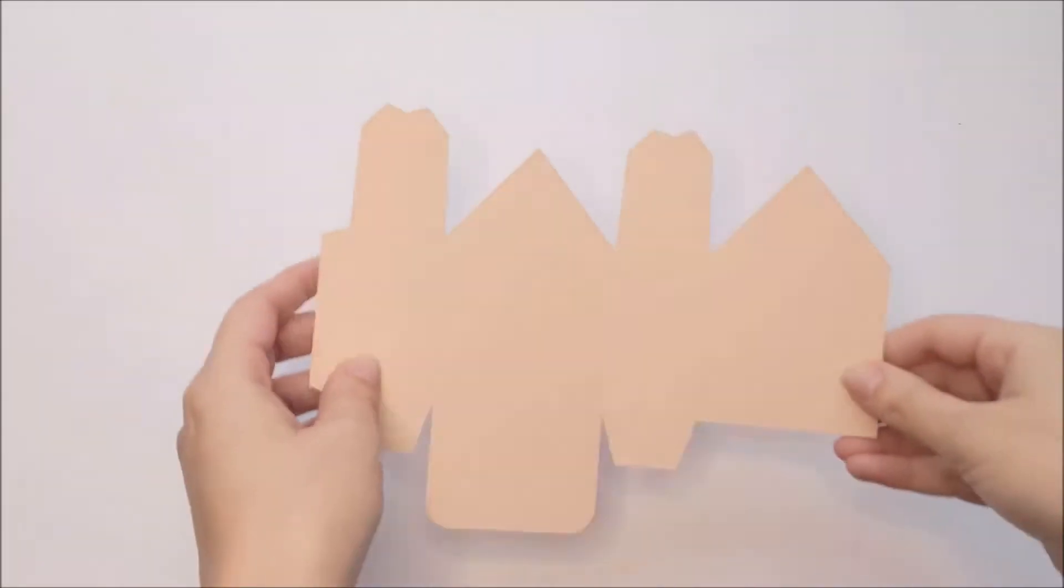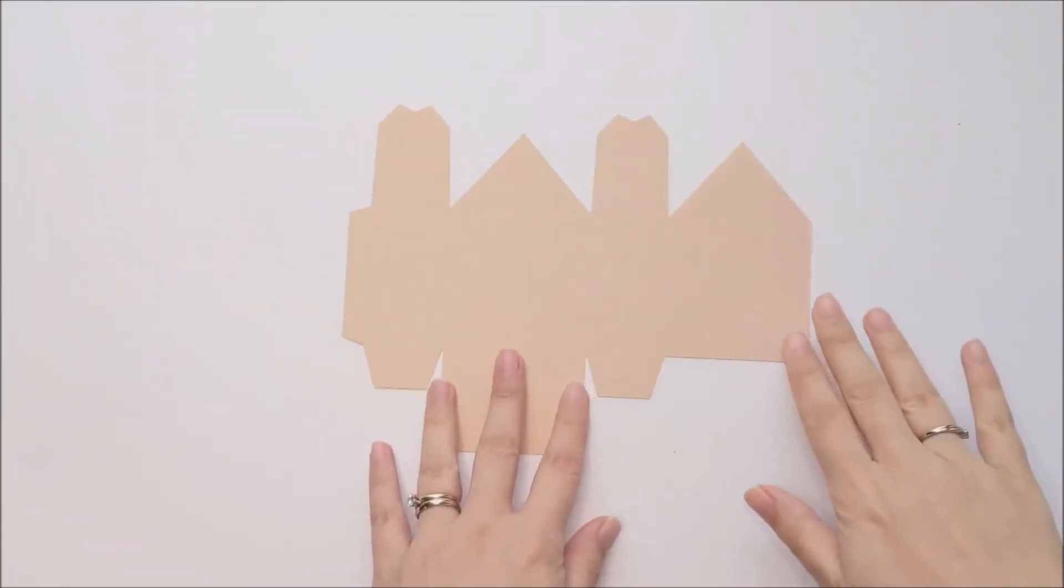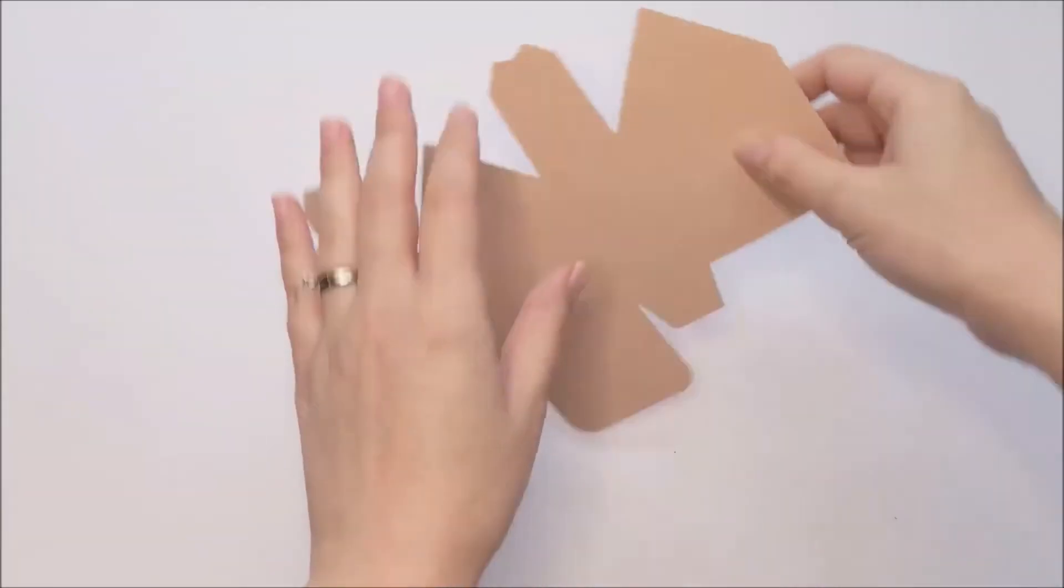As always, start by cutting out your pieces on your cutting machine, and I like to start by folding the box along the score lines.